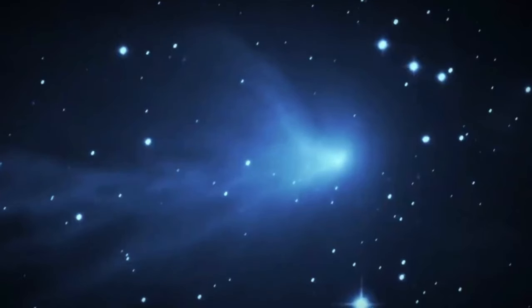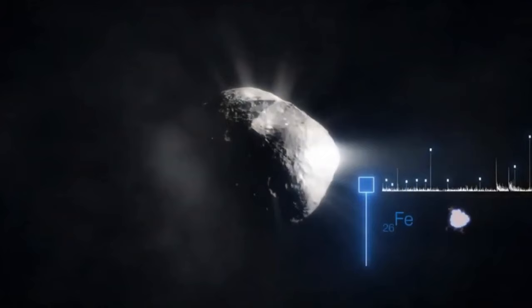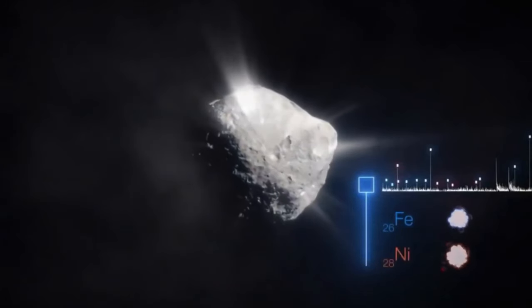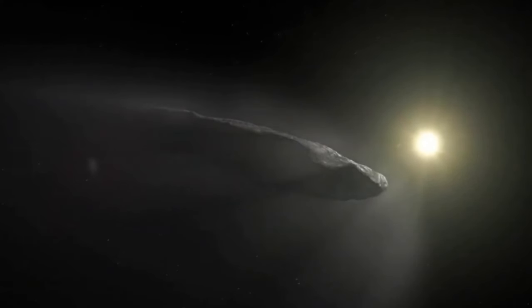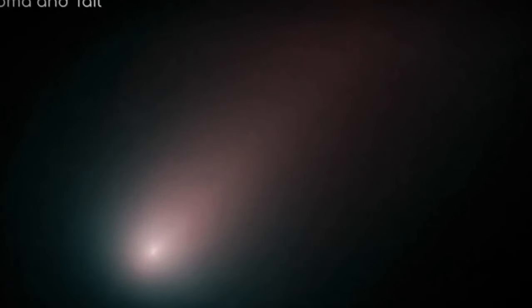The specific stellar origin of Oumuamua remains a baffling enigma. However, in 2018, meticulous research revealed that approximately one million years ago, the object traversed in proximity to four stars, with the red dwarf star HIP 3757 being the closest encounter. This raises the intriguing possibility that Oumuamua either originated from this stellar system or has been adrift in space for an exceedingly long period.